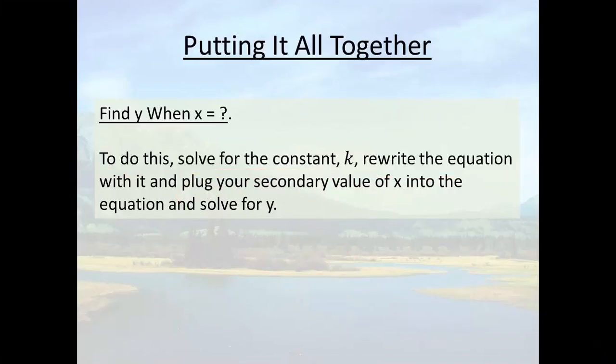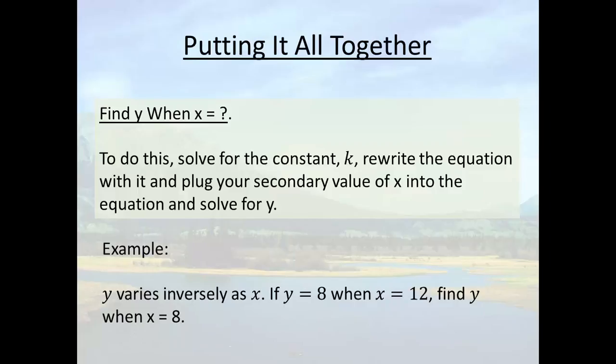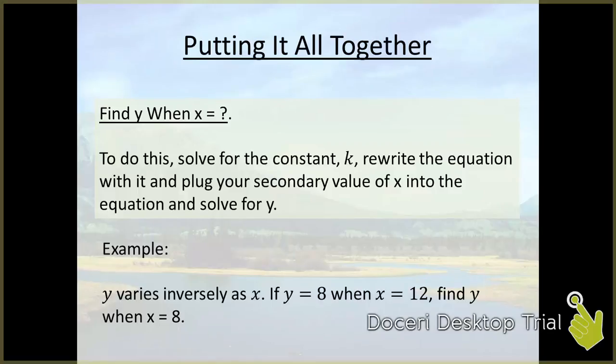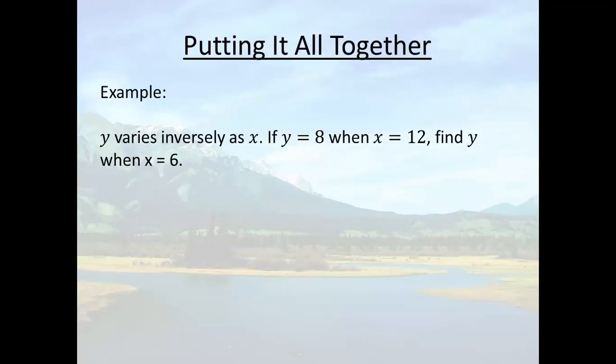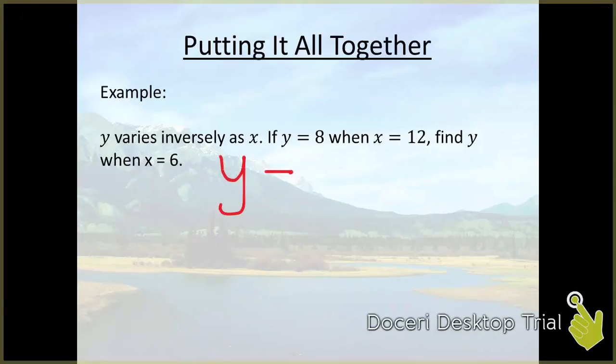So let's try an example. y varies inversely as x. If y equals 8 when x equals 12, find y when x equals 8. So again we have a problem where they tell us right away what type of relationship we have. That means we're going to start off by writing a formula of that type of model.